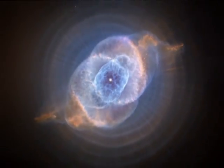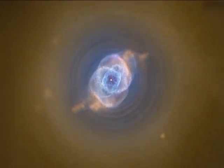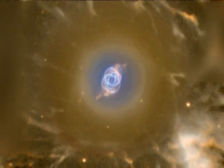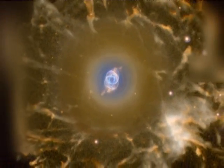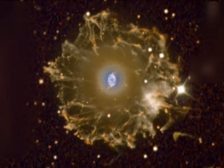Just before they breathe their last breath, stars like our sun go out in a final blaze of glory. In its final stages of nuclear fusion, stellar winds blow from the star, causing the red giant to swell to an enormous size.